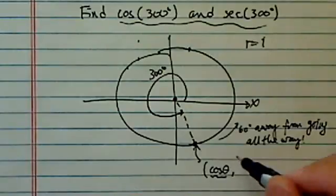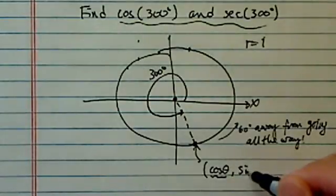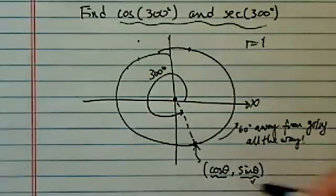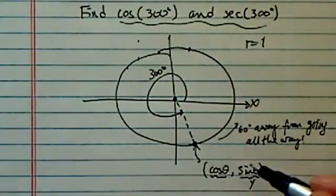The x-coordinate is always cosine of the angle, and sine theta is always the y-value of the point, the ending point here.